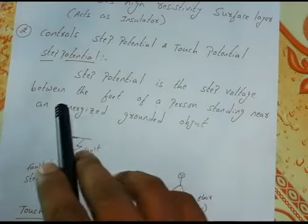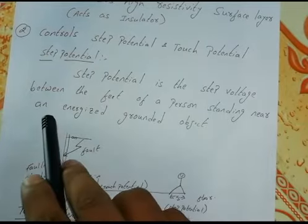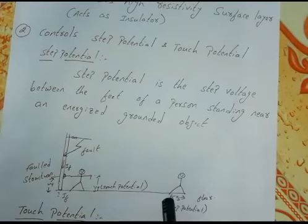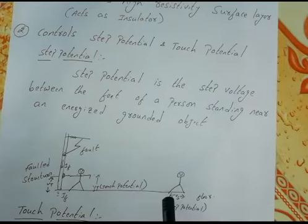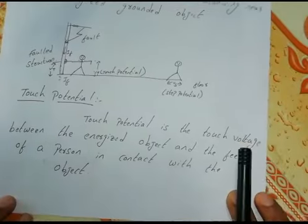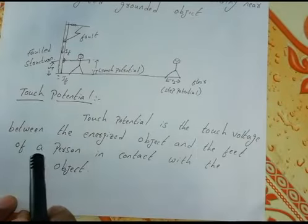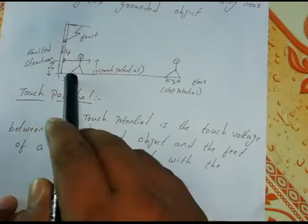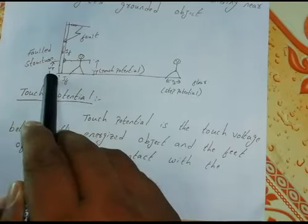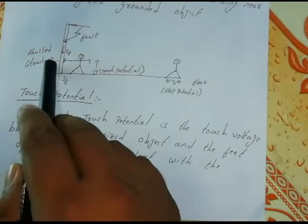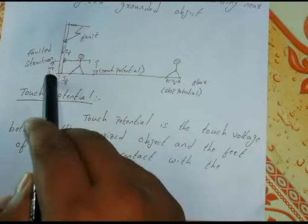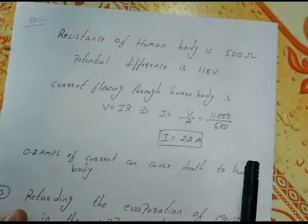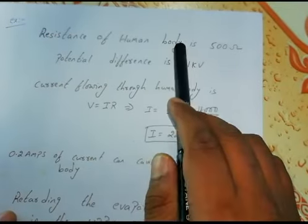As per the definition, step potential is the step voltage between the feet of a person standing near an energized grounded object — meaning there is a difference in potential at the two feet. Touch potential is the touch voltage between an energized object and the feet of a person in contact with the object. Here, this is zero potential and there is a difference potential, so there is a voltage difference between the two points — that is the touch potential.